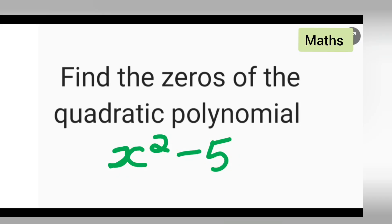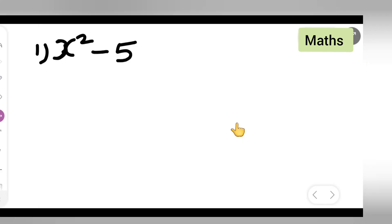Welcome to today's class of mathematics. Today's question is: find the zeros of the quadratic polynomial x squared minus 5. This question is taken from class 10 mathematics. So let me start — we need to find the zeros of the quadratic polynomial x squared minus 5.